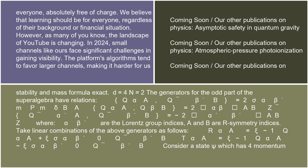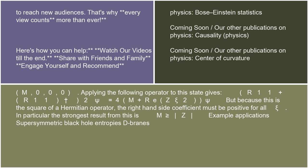Take linear combinations of the above generators as follows: R_alpha^a(xi) and its conjugate, combining Q_alpha^a(xi) with sigma terms and Q_beta^b. Consider a state psi which has rest-frame four-momentum m, 0, 0, 0. Applying the following operator to this state gives: